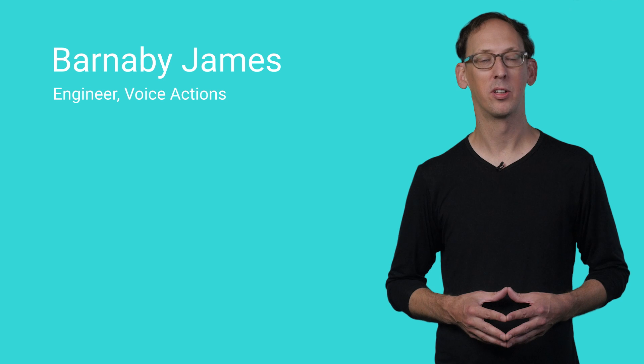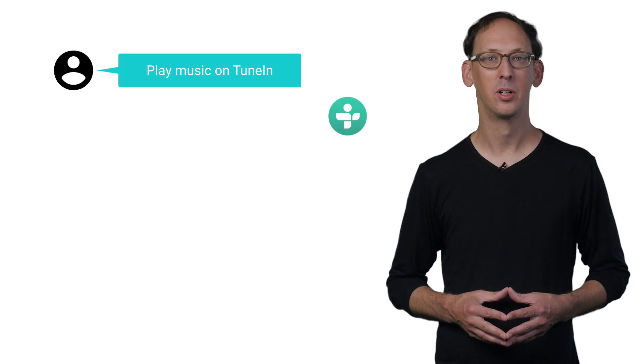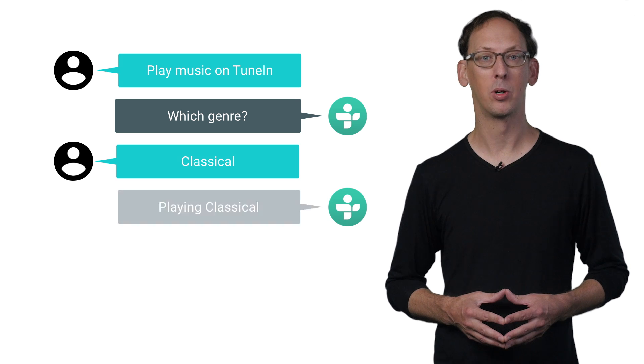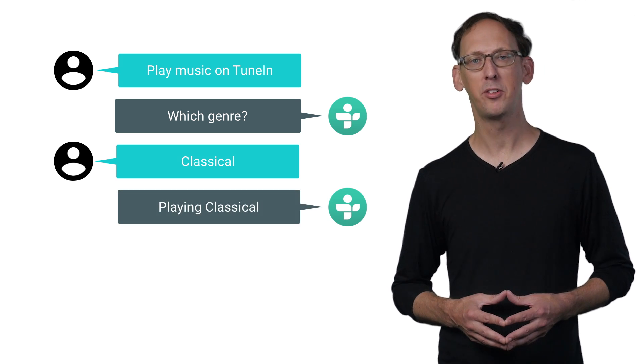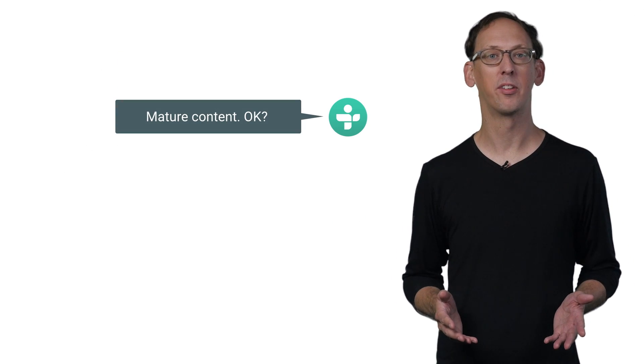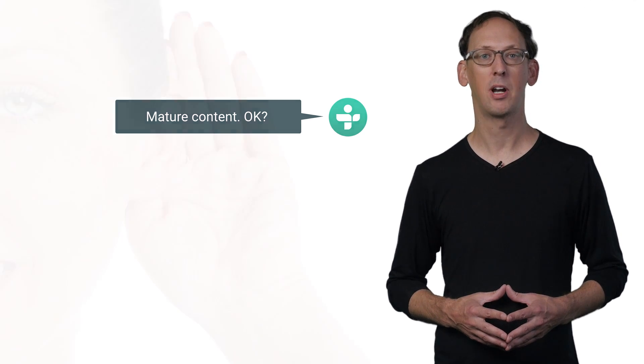Hi, I'm Barnaby James and I work on the voice actions team at Google. For some voice actions, it's clear what an app should do. But sometimes the user's command isn't clear and your app isn't sure what to do and wants to ask the user a question, or maybe it needs to confirm something is safe. The Voice Interaction API lets your app focus on the questions to ask the user while Google handles the speech-to-text, microphone setup, and parsing the responses.